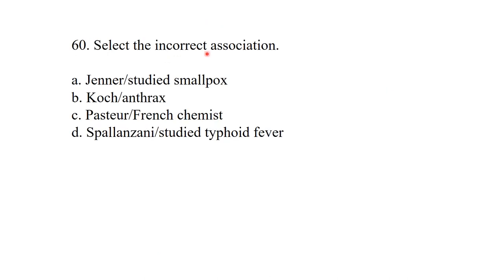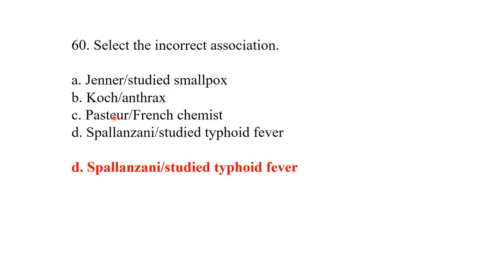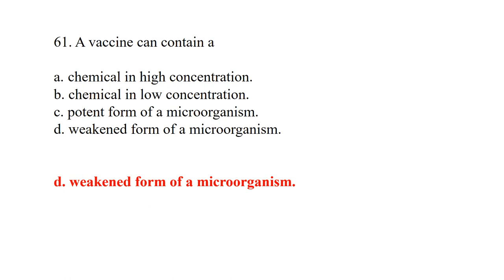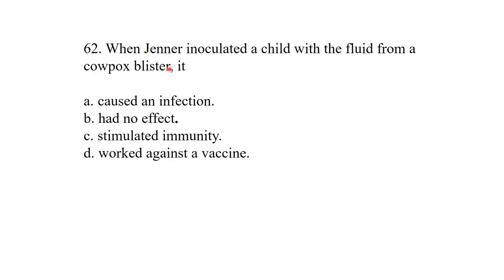Select the incorrect association: Spallanzani studied typhoid fever — that is incorrect. Jenner studied smallpox — correct. Koch studied anthrax — correct. Pasteur was a French chemist — correct. So Spallanzani studying typhoid fever is the incorrect association. A vaccine can contain a weakened form of microorganism. When Jenner inoculated a child with fluid from a cowpox blister, it stimulated immunity — stimulated immunity is the best answer.